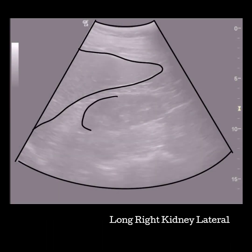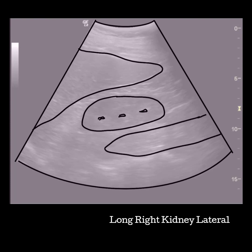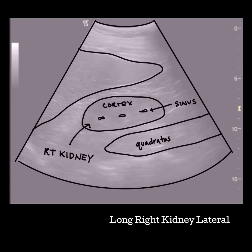The kidney appears hypoechoic compared to a normal liver, which sits superior to the kidney. Very little sinus should be seen, if any. Make sure that you can see all the borders of the kidney. The quadratus muscle is in the lateral plane inferior to the kidney.